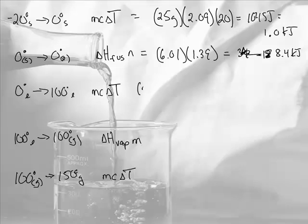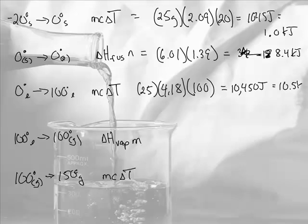Now we're going from zero to 100. M is 25 grams times the specific heat of liquid water, 4.18. Delta T, we're going all the way through 100 degrees from zero to 100. 10,450 joules, which is 10.5 kilojoules.